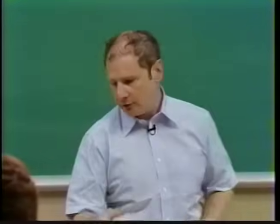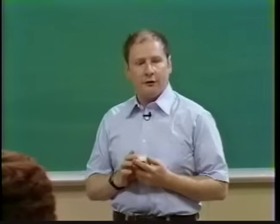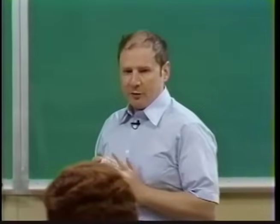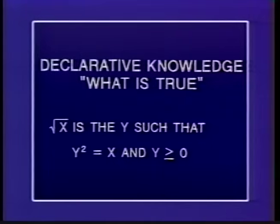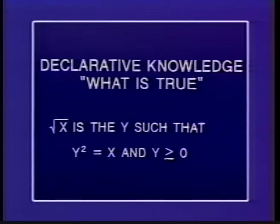Let me give you an example. Here is a piece of mathematics that says what a square root is: the square root of x is the number y such that y squared equals x and y is greater than 0. That's a fine piece of mathematics. But just telling you what a square root is doesn't really say anything about how you might go out and find one. So let's contrast that with a piece of imperative knowledge.